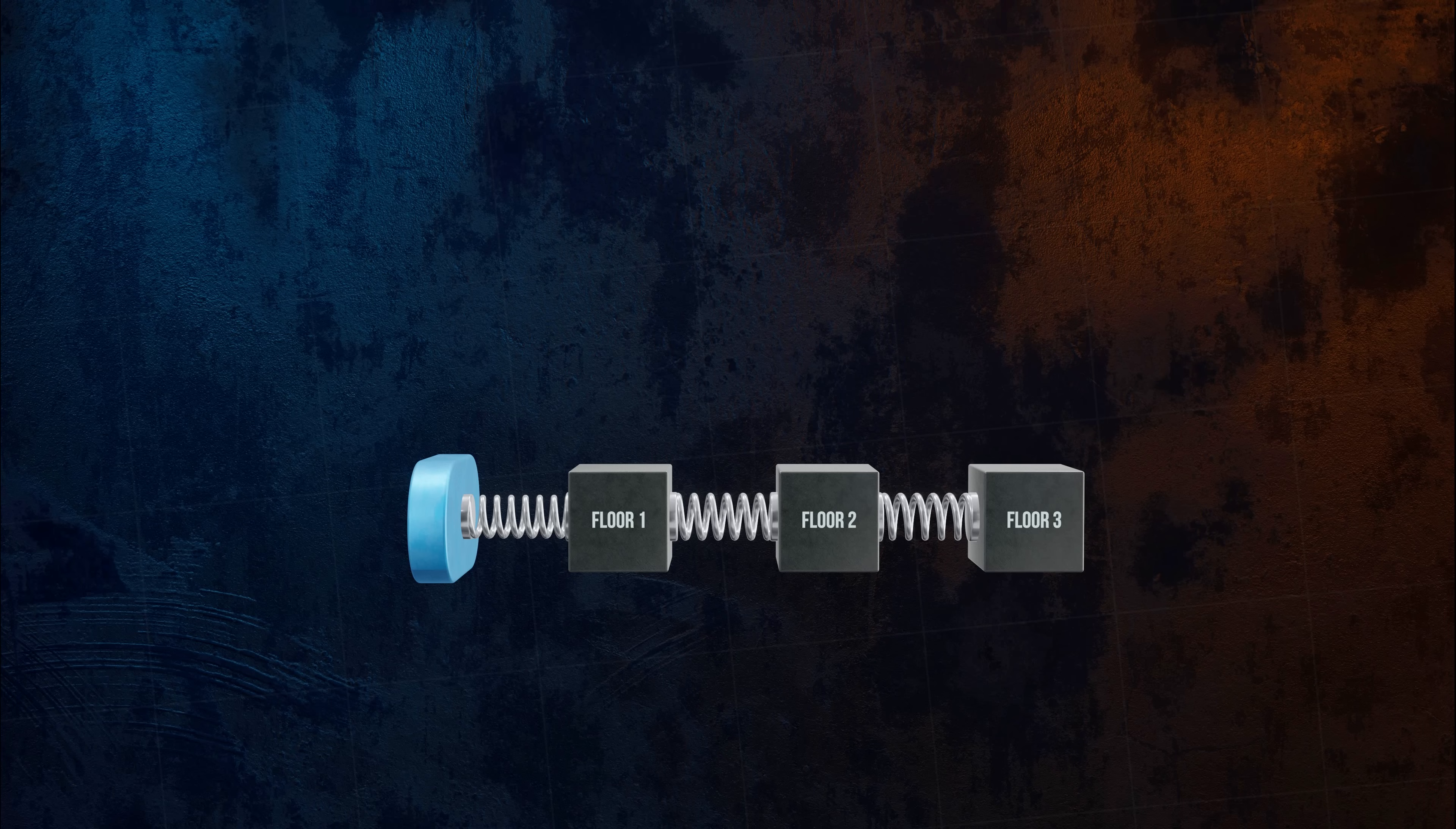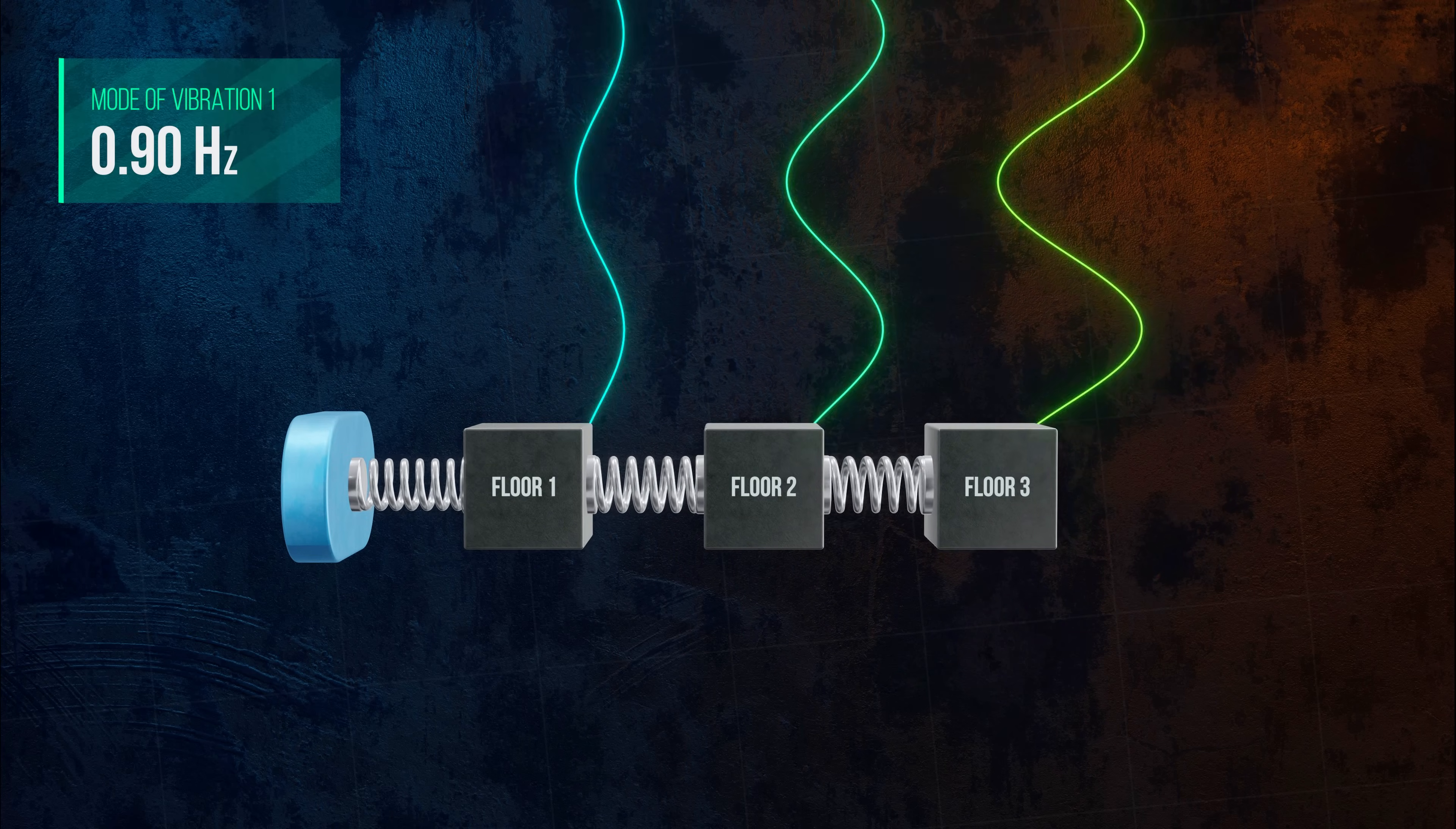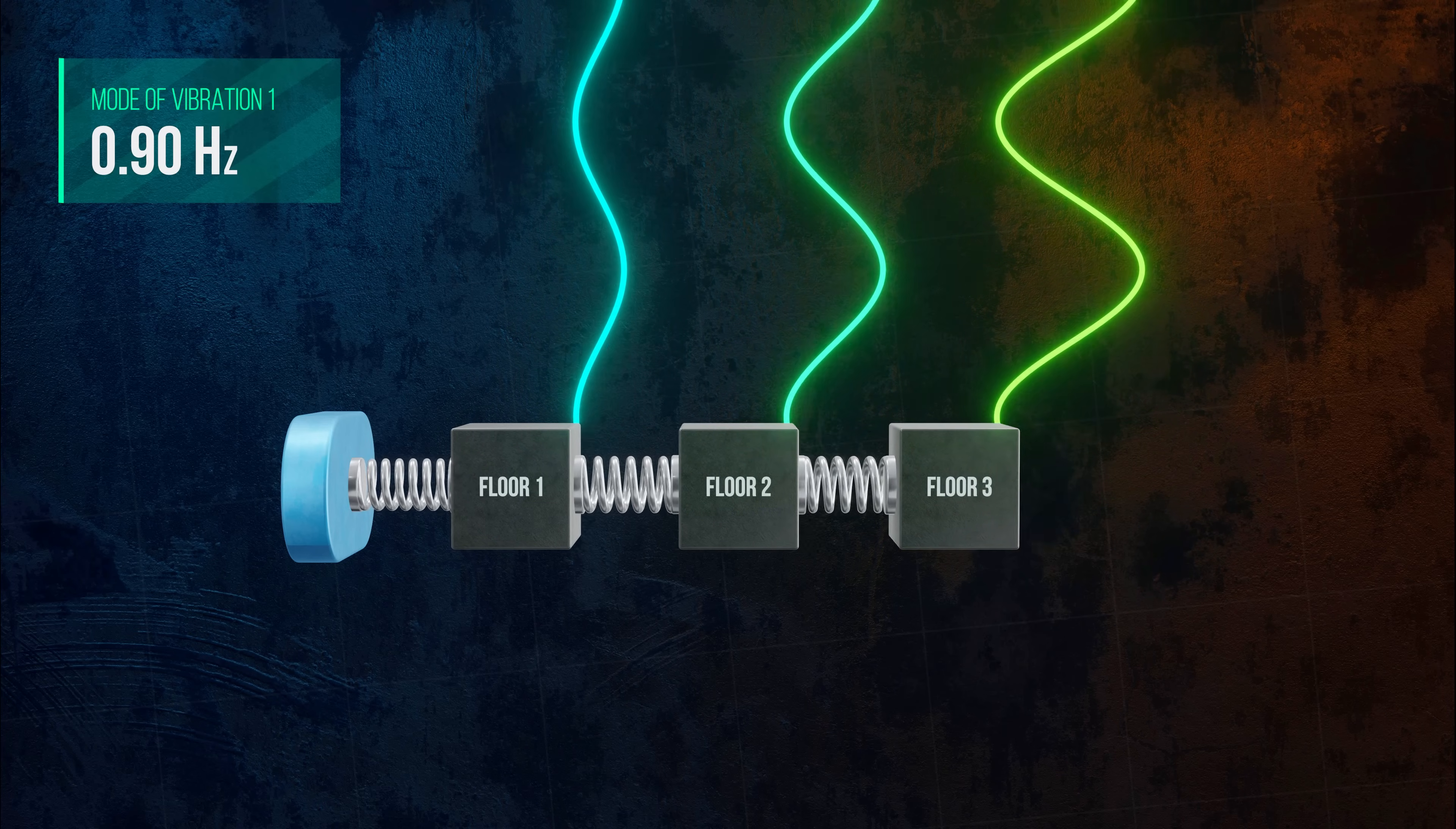A single degree of freedom system has one natural frequency and can only vibrate in one way. But since our model has three degrees of freedom, it will also have three natural frequencies, and at each natural frequency the system will vibrate in a specific way, which is called a mode shape.